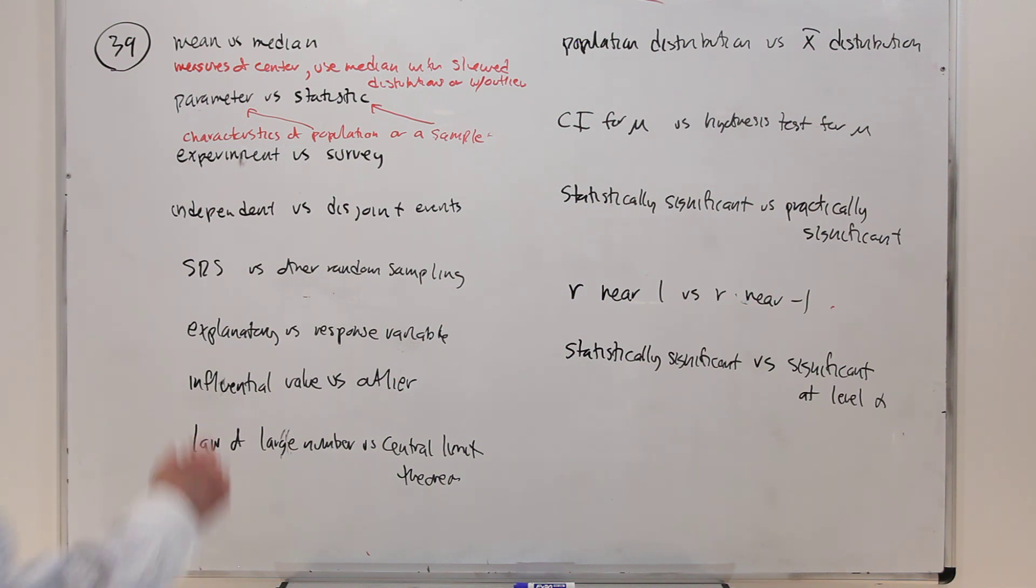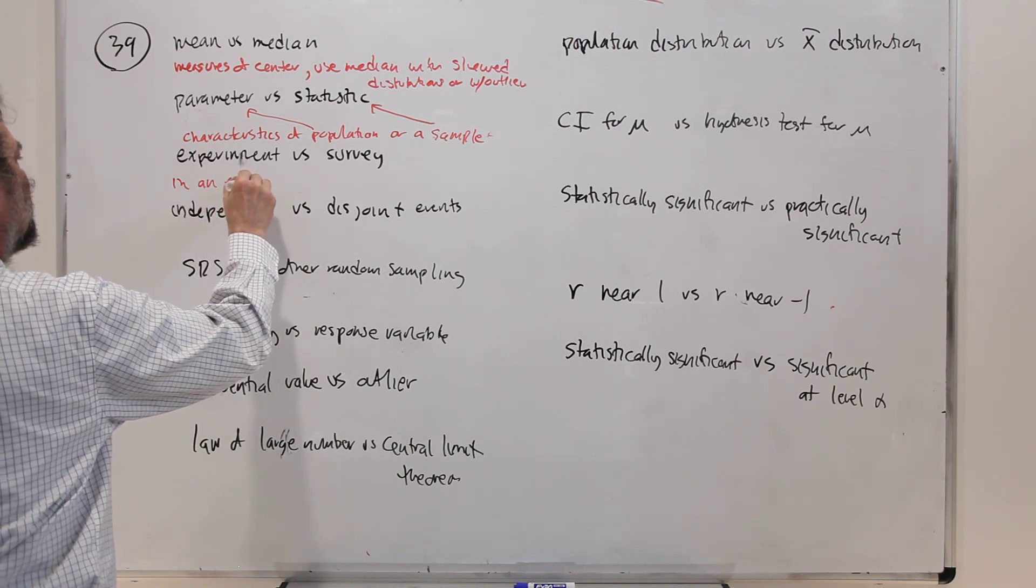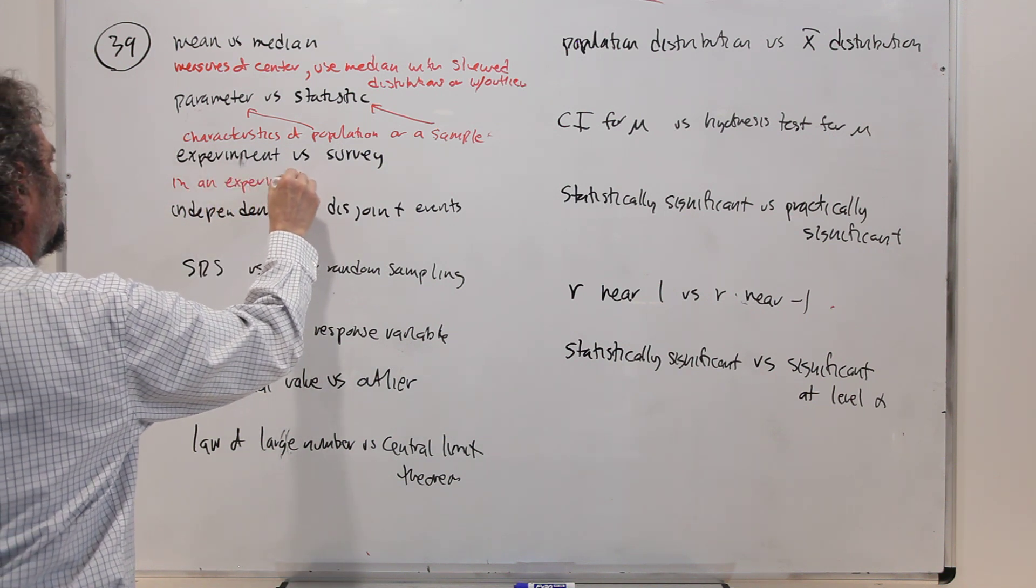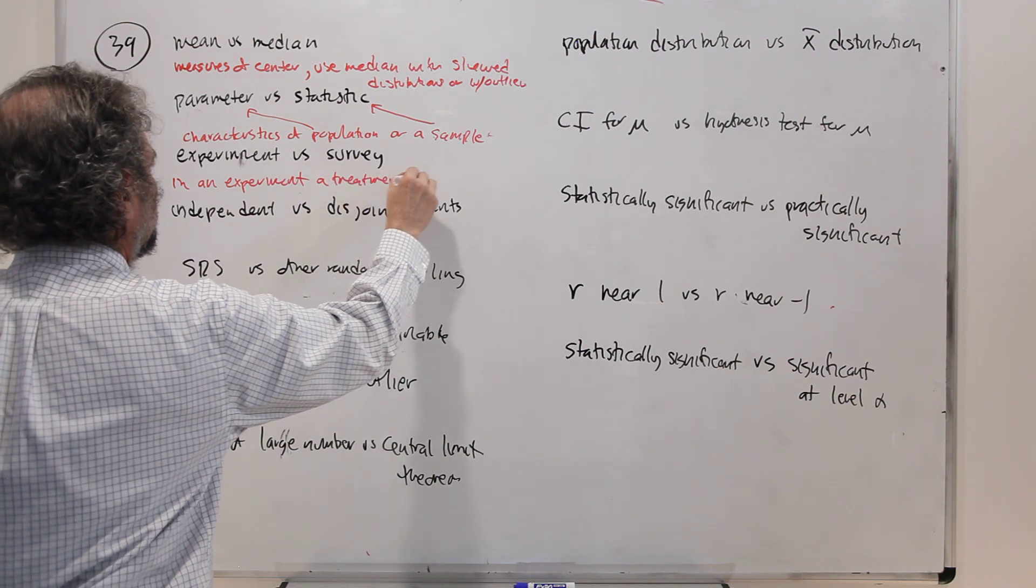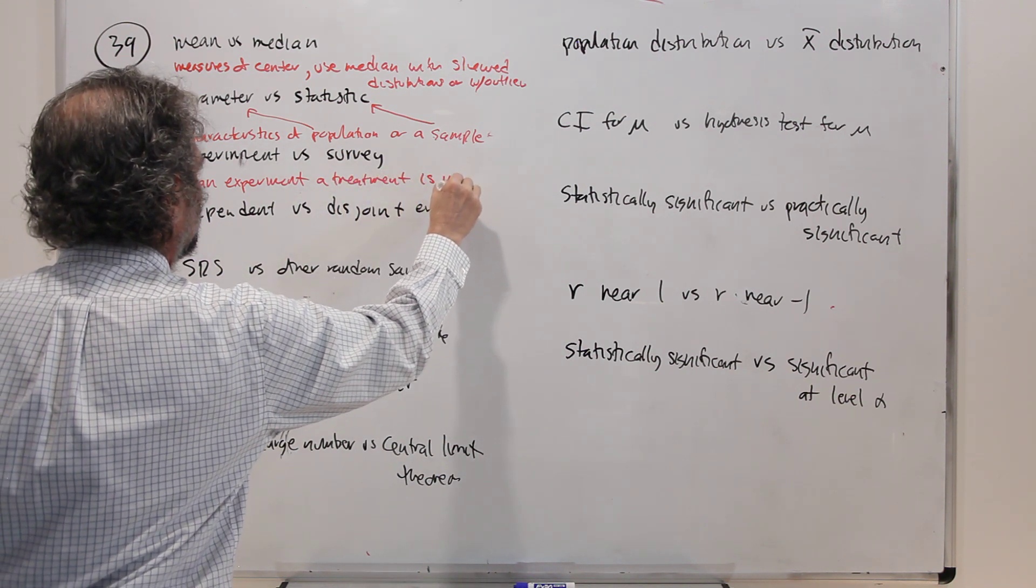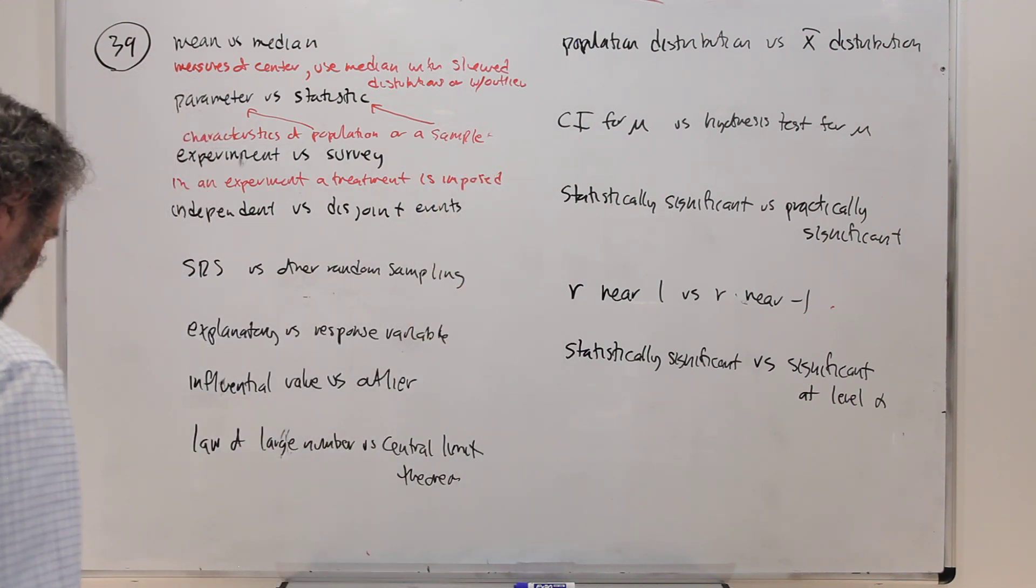Experiment versus survey. In an experiment, a treatment is imposed. So if you're just measuring things without imposing a treatment, you haven't done an experiment you've just done a survey.